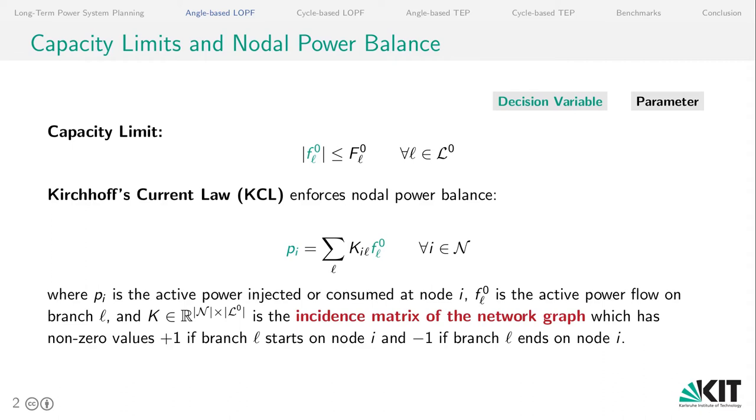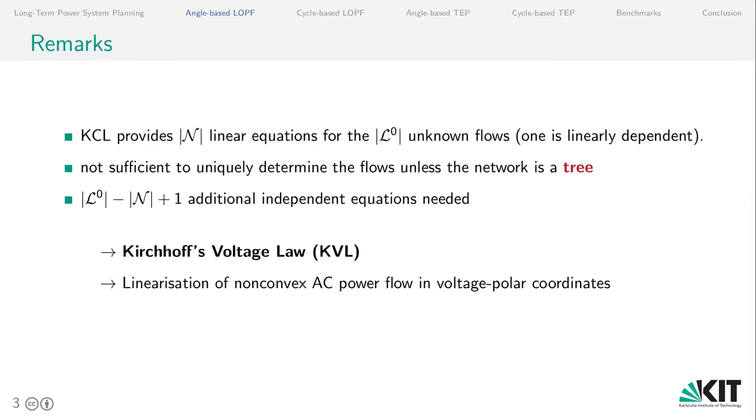So what goes into a node or is consumed or generated at a node has to balance out. And we do this by using the incidence matrix of the network graph, which has all the information of the topology of the network. KCL alone is not enough to uniquely determine the flows in the network, unless the network is a tree, which is a very specific case. From KCL we get N linear equations for each node in the network for the L unknown flows. So what we need is L minus N plus 1 additional independent equations.